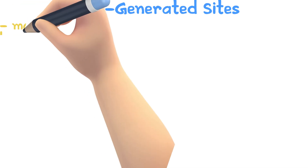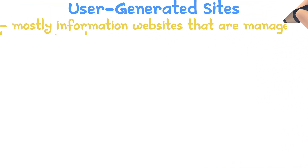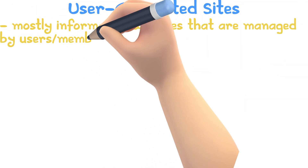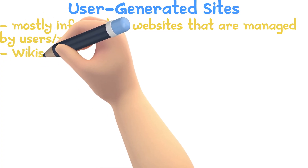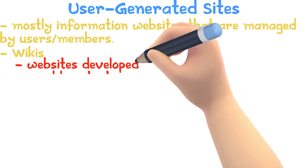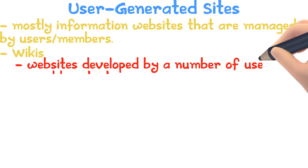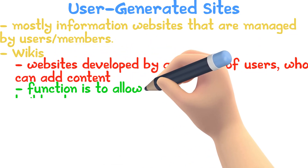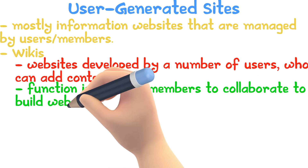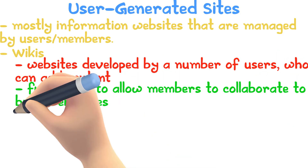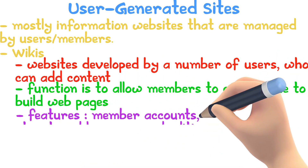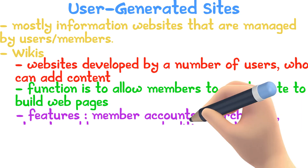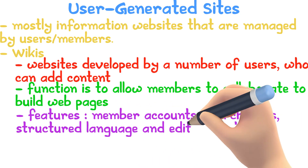User Generated Sites are mostly information websites that are managed by user members. Wikis are websites developed by a number of users who can add content. The function is to allow members to collaborate to build web pages. Some features include member accounts, search tools, structured language, and editing features.